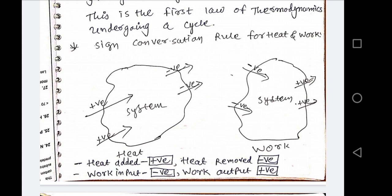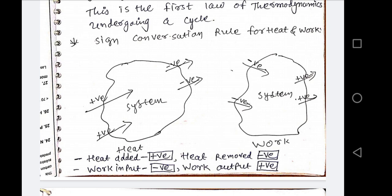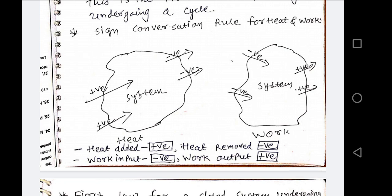Now we discuss sign convention, which is very important throughout engineering. The rules are: heat added to the system is positive; heat removed from the system is negative. Work input to the system (work added) is negative; work output from the system is positive. On the diagram, the left-hand system shows the heat rule — arrow into the system is positive, arrow out is negative. The right-hand system shows the work rule.